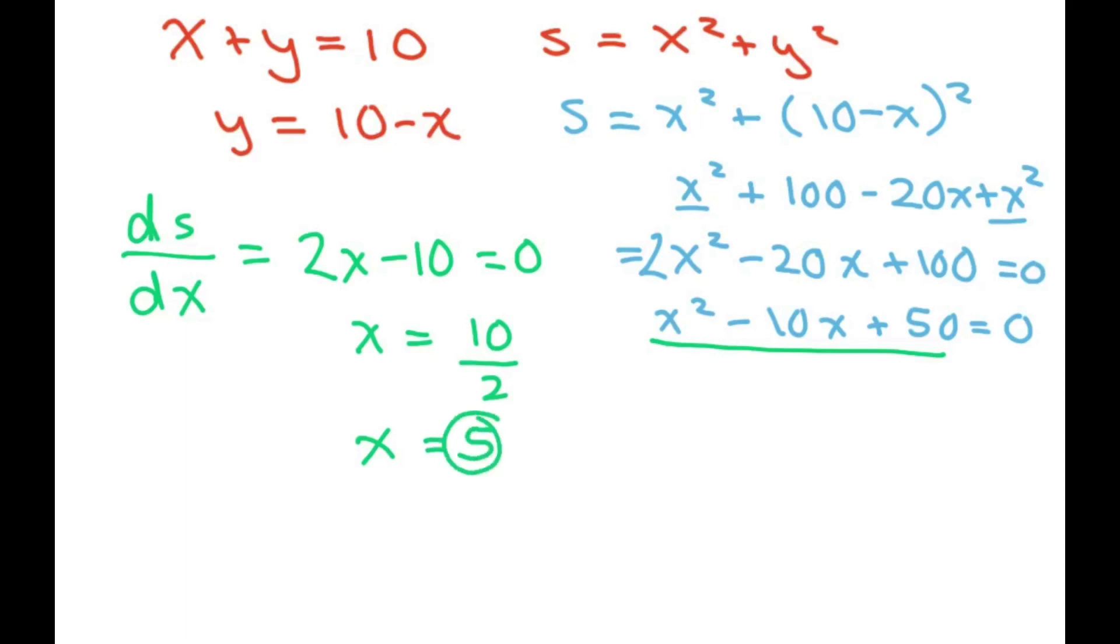So if x is 5, you plug that back in here. So you have 5 plus y equals 10, so y equals 5. Therefore, my two numbers are 5 and 5 that represent a minimum.